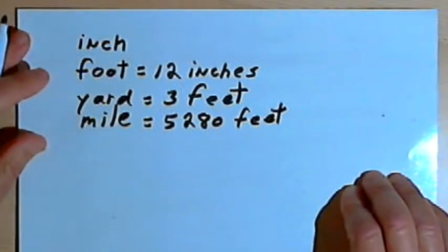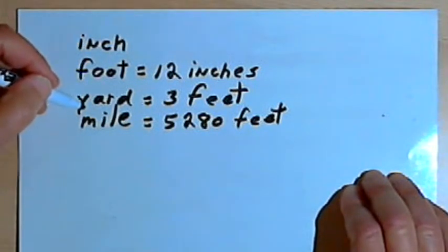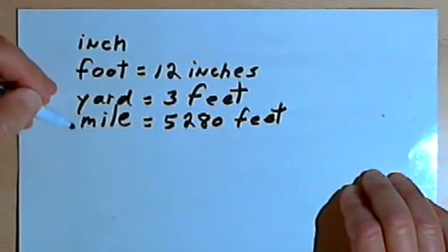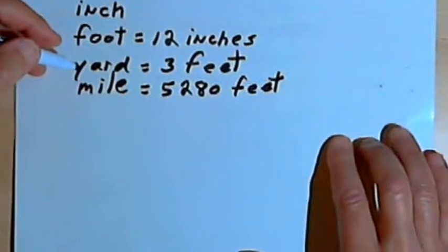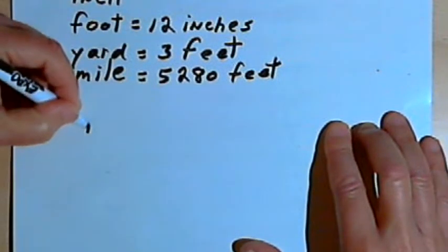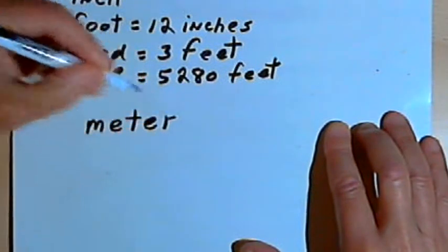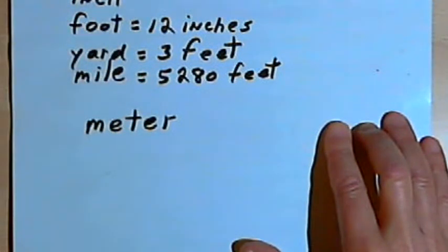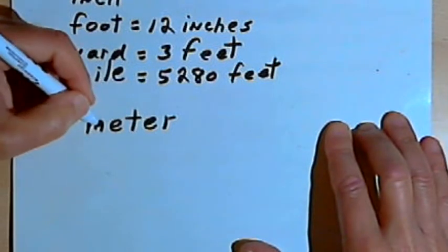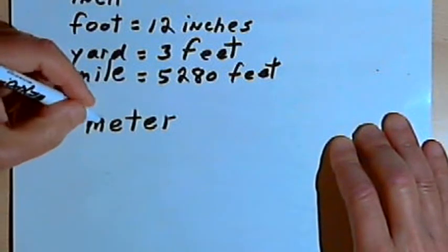In the metric system, instead of having different units of measure, there's really only one unit when we're talking about distance. The basic unit of measure is the meter. A meter is about 39 inches long. That's not exact, but it's approximate, or about the length of a baseball bat.